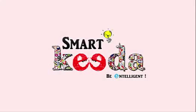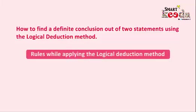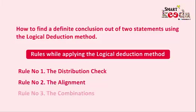In the previous video we learned the term distribution, and now in this video we'll discuss how we should go about finding a definite conclusion out of two or more statements using the deduction method. Before that, let's go through some important rules which you must learn before applying the deduction method. The first rule is the distribution check, the second rule is the alignment, and the third rule is the combinations. We'll study all the rules one by one.